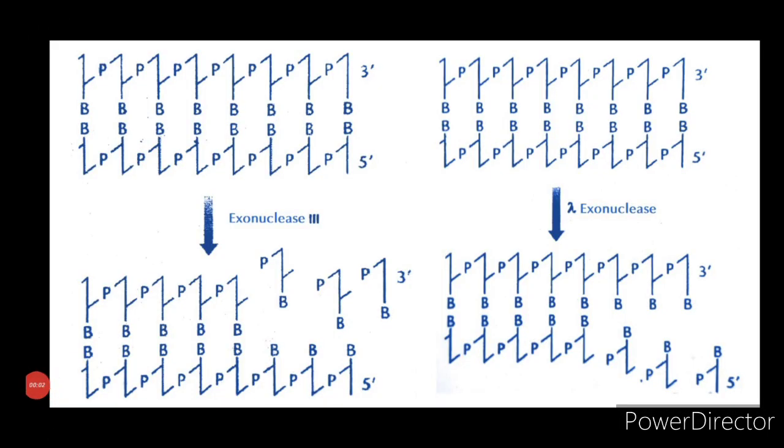There are three examples of exonuclease enzyme that are generally used in gene cloning. They are: first, BAL31; second, exonuclease 3; and third, lambda exonuclease. We will understand what each exonuclease enzyme does and what are their applications.